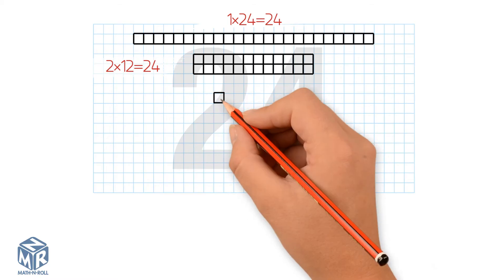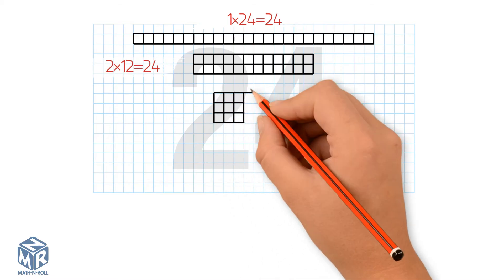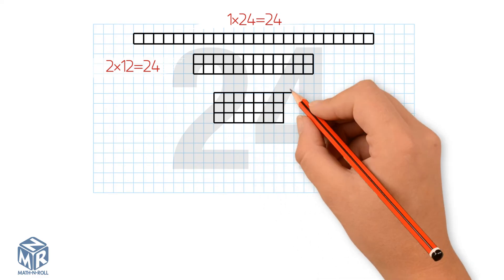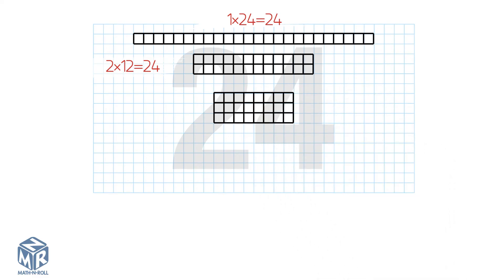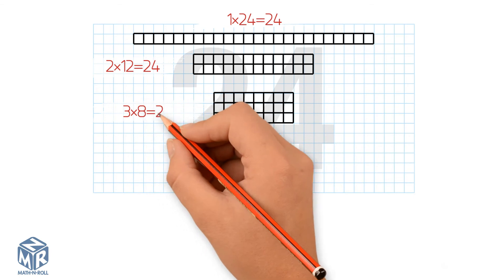Let's do the same with 3 rows. We have 8 even columns, so 3 times 8 is a factor pair.